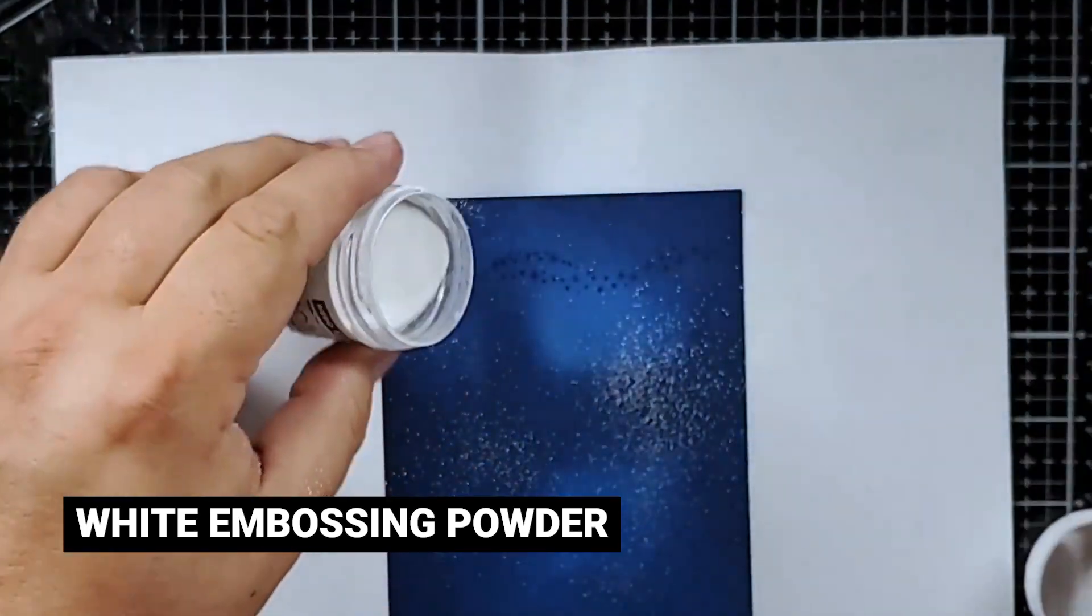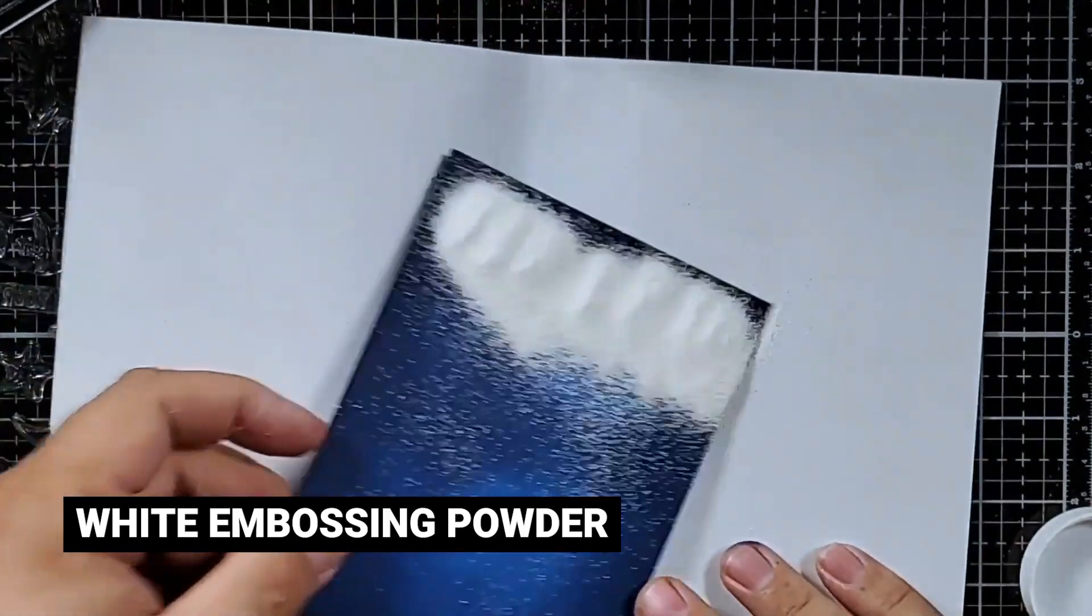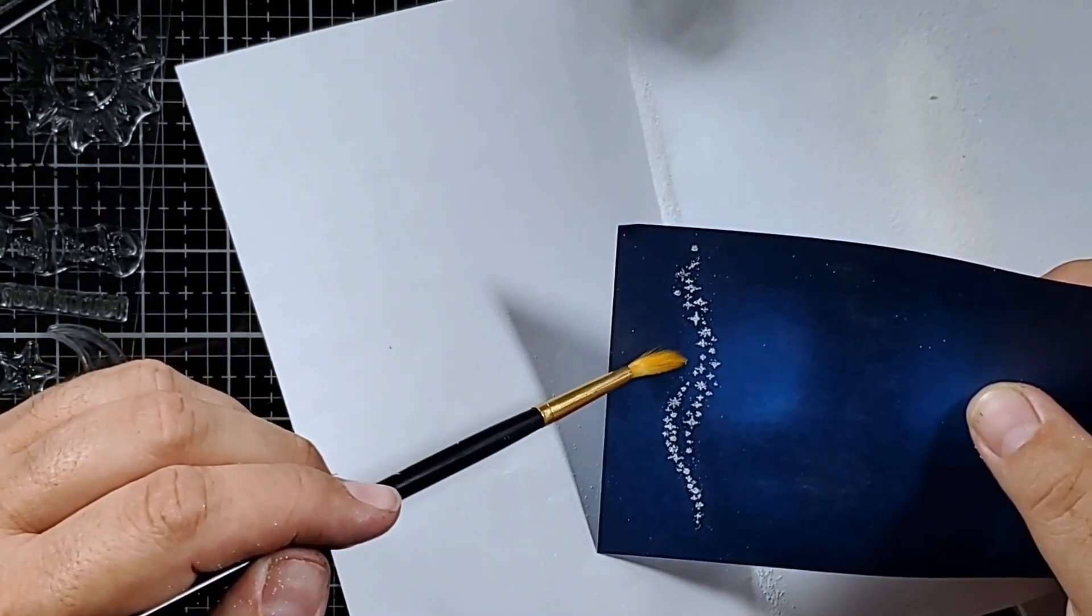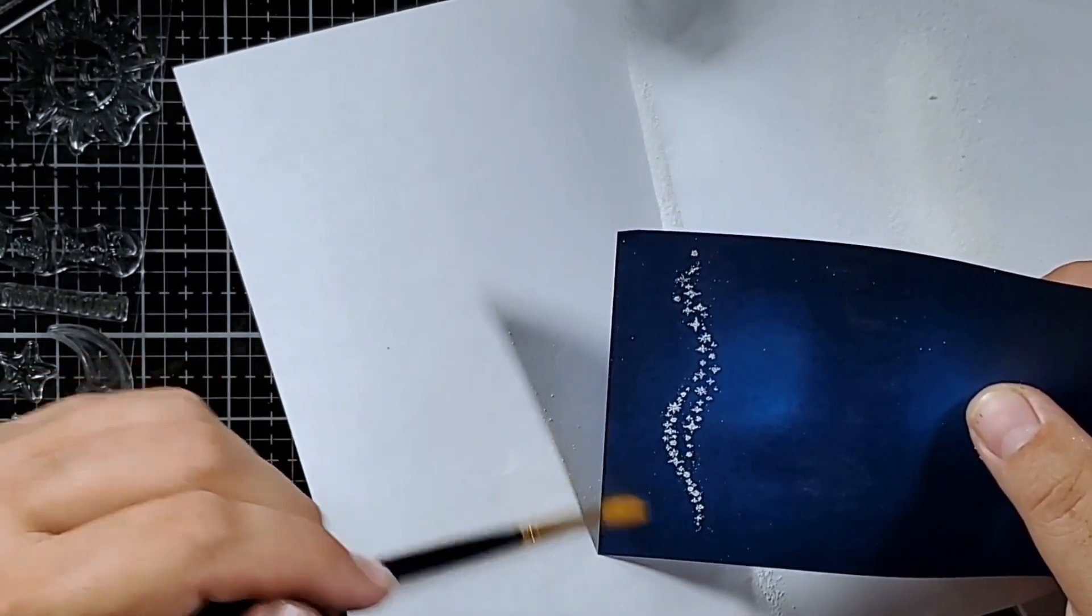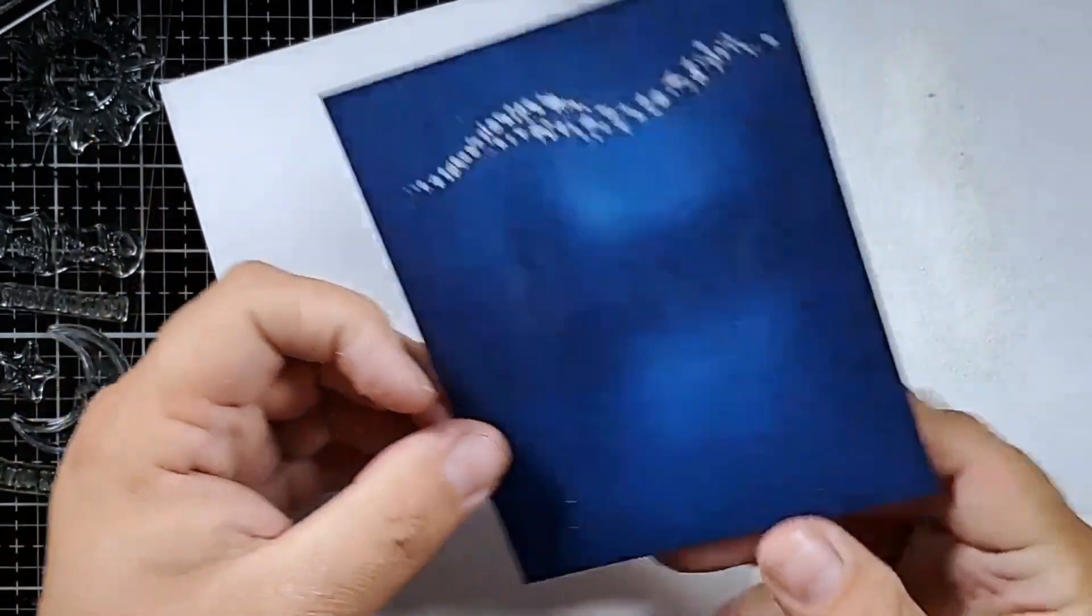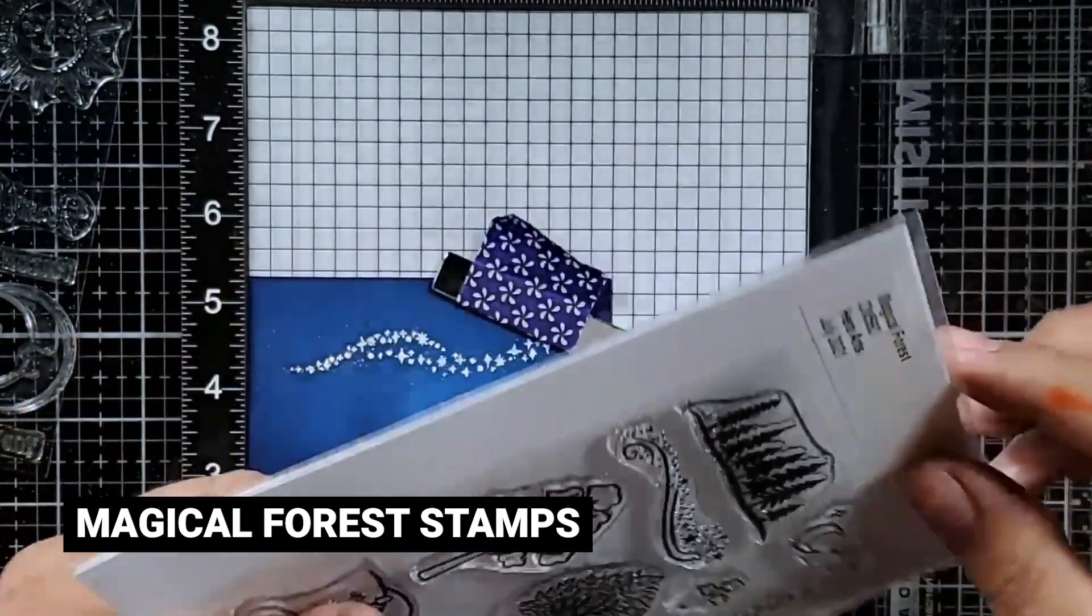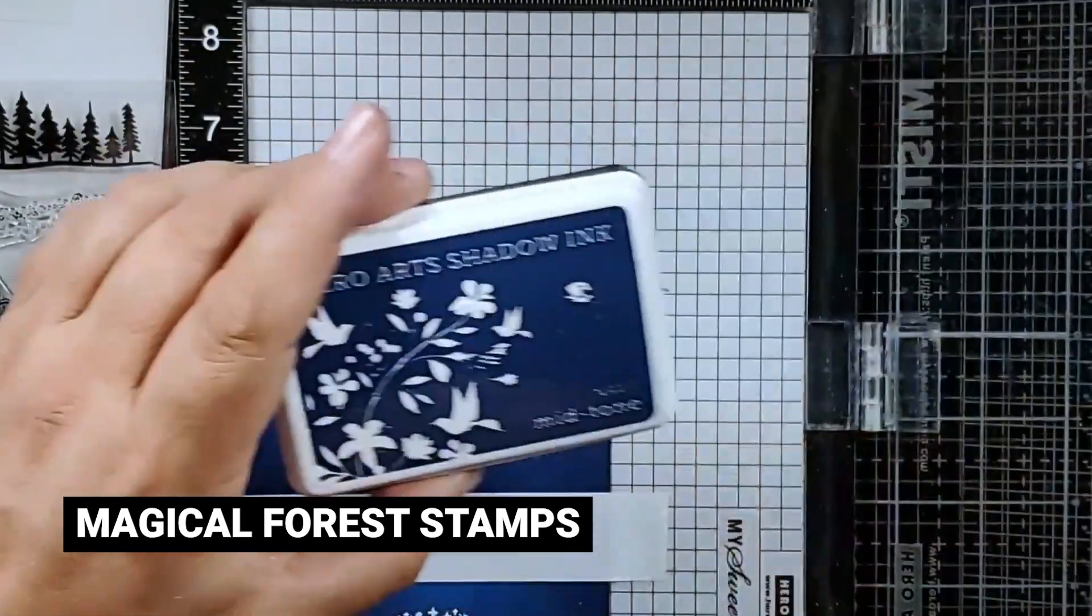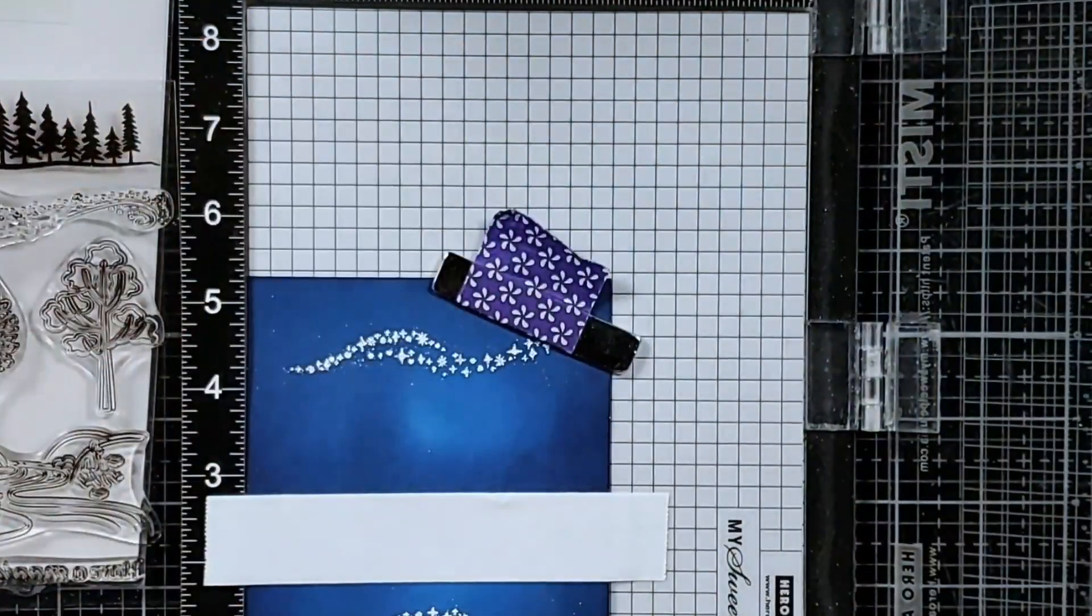And then I'm going to add my white embossing powder. Now my panel wasn't completely dry when I added my embossing powder to it, so I'm just taking out one of my brushes, a cheap watercolor brush, and brushing off bits that are way out of line. Now there are some stragglers on there and it's perfectly fine because I'm creating a starry night, so they just kind of add to the feel.